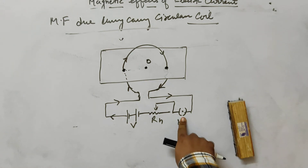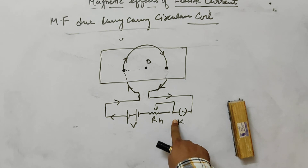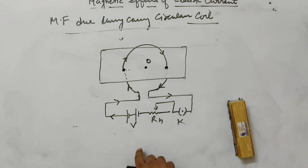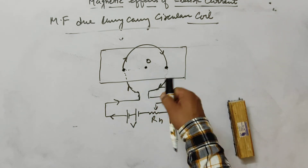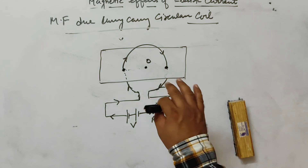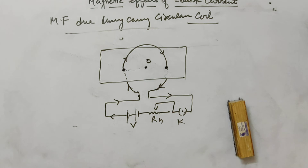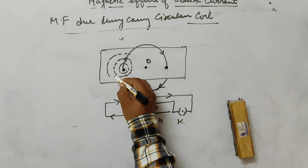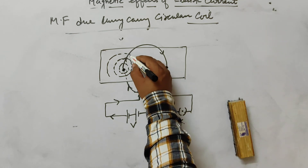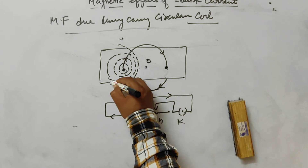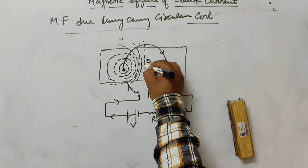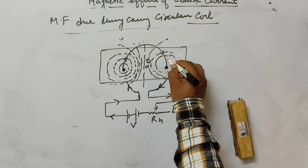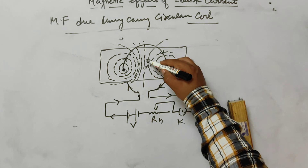The current is passed through this circular coil. Iron filings are sprinkled on the board and the current passes through the coil. The iron filings arrange themselves in a pattern — similar to concentric rings, but with a characteristic pattern at the center.